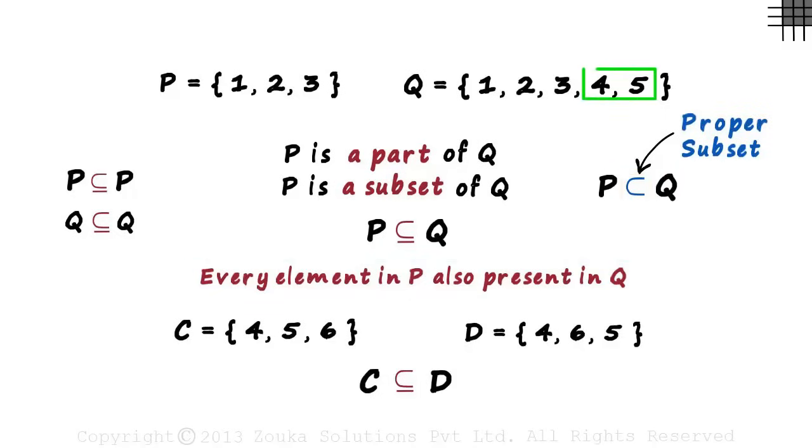And this tells us that all elements of P are present in set Q. But there is at least one element in Q which is not present in P. We can see that four and five are not present in P. So that's the concept of a proper subset. Sometimes it is also referred to as the strict subset.